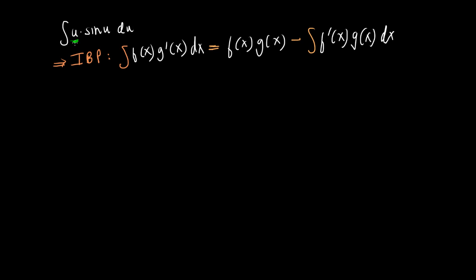But if I take this as my f of x, then later on I have to differentiate it, right? f of x and here it is f prime of x. So later on I will have to differentiate u, which rather gets us to 1. The derivative of u is 1.